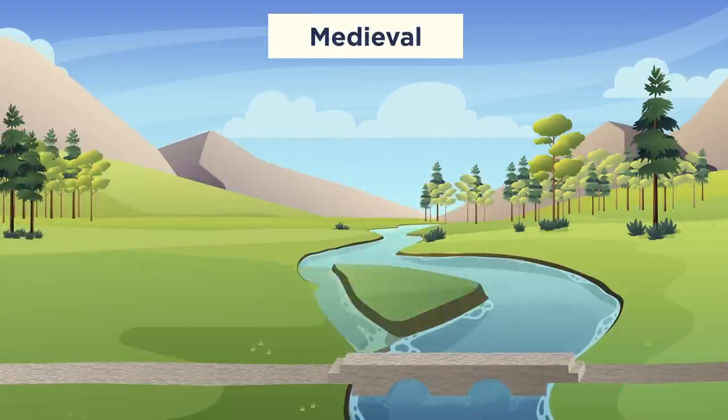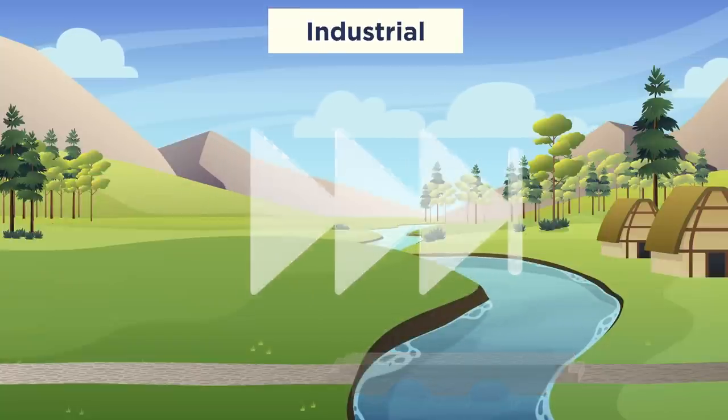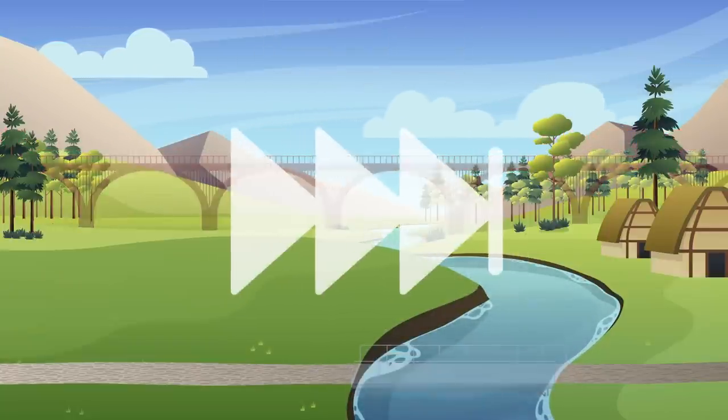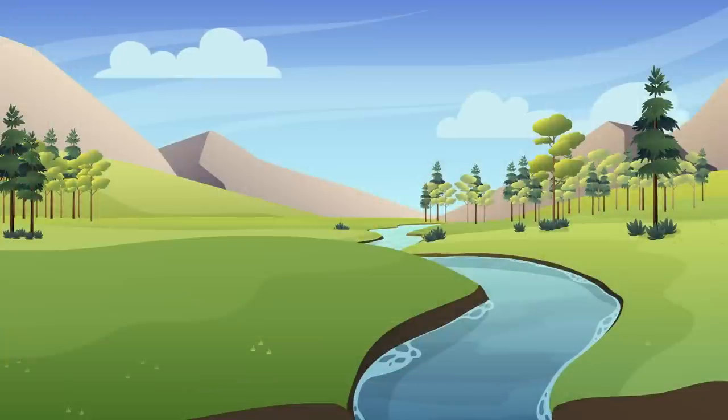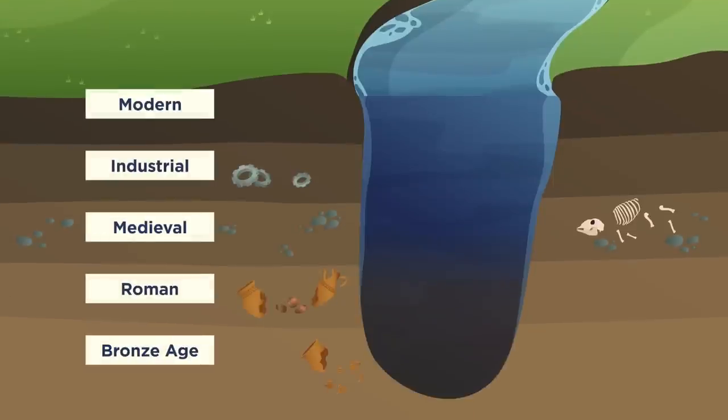Archaeologists think of an excavation site as a stratified series of deposits, layers and structures. These either build up over time or are cut away by human activities or natural processes known as truncations. These divisions are called stratigraphic units or contexts.